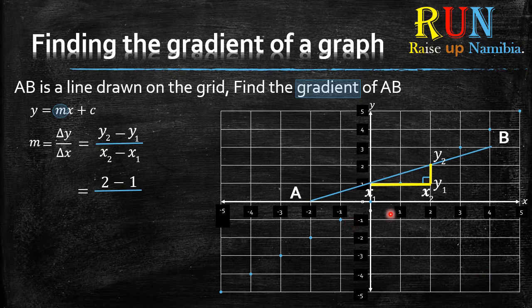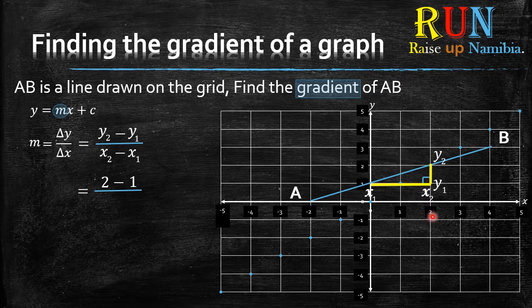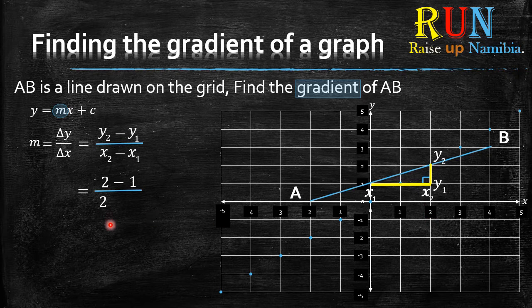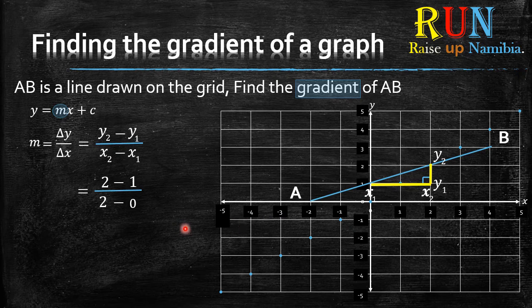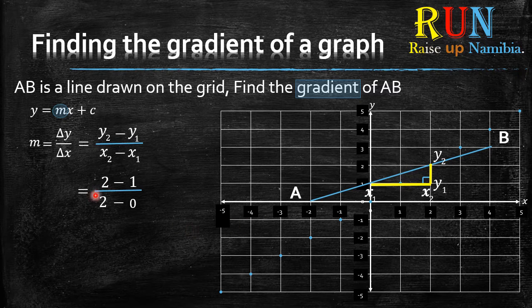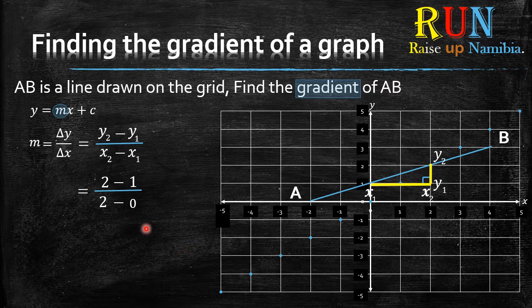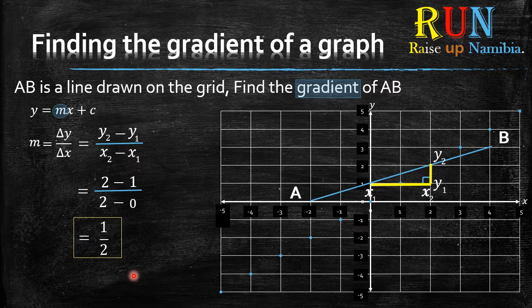So what is your X2? X2 is positive 2. So you write down that positive 2 and then you subtract. What is your X1? X1 on the X axis is 0. So you write down the 0. Now, if you work this out on your calculator, well, you don't necessarily even need a calculator because you know that 2 minus 1 will be 1 and then 2 minus 0 will be 2. So you get the exact same answer.